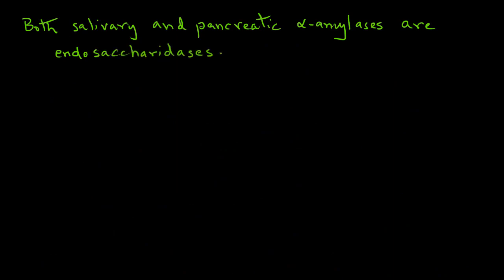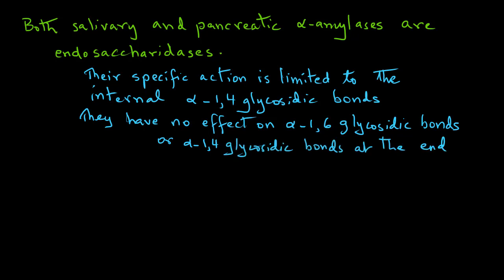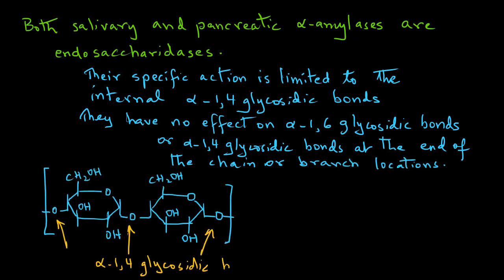Both the salivary and pancreatic alpha-amylases are called endosaccharidases. Their specific action is limited to the internal alpha-1,4-glycosidic bonds. They have no effect on the alpha-1,6-glycosidic bonds that are present in the amylopectin molecule as we saw earlier. They also have no effect on the alpha-1,4-glycosidic bonds at the end of the chain. The action of these salivary and pancreatic alpha-amylases is only on the internal alpha-1,4-glycosidic bonds, as shown here with these arrows.